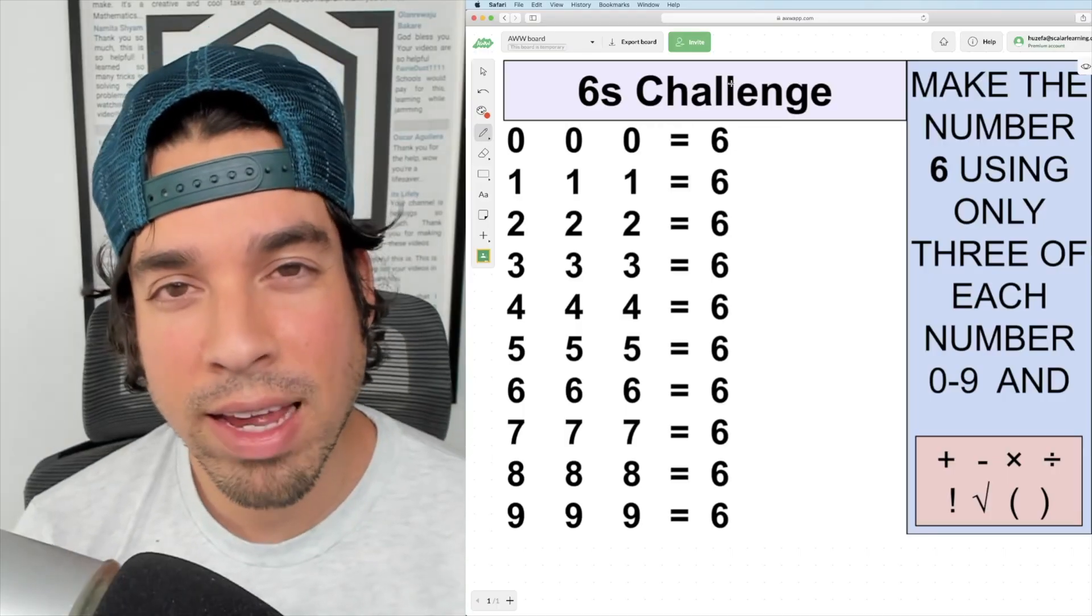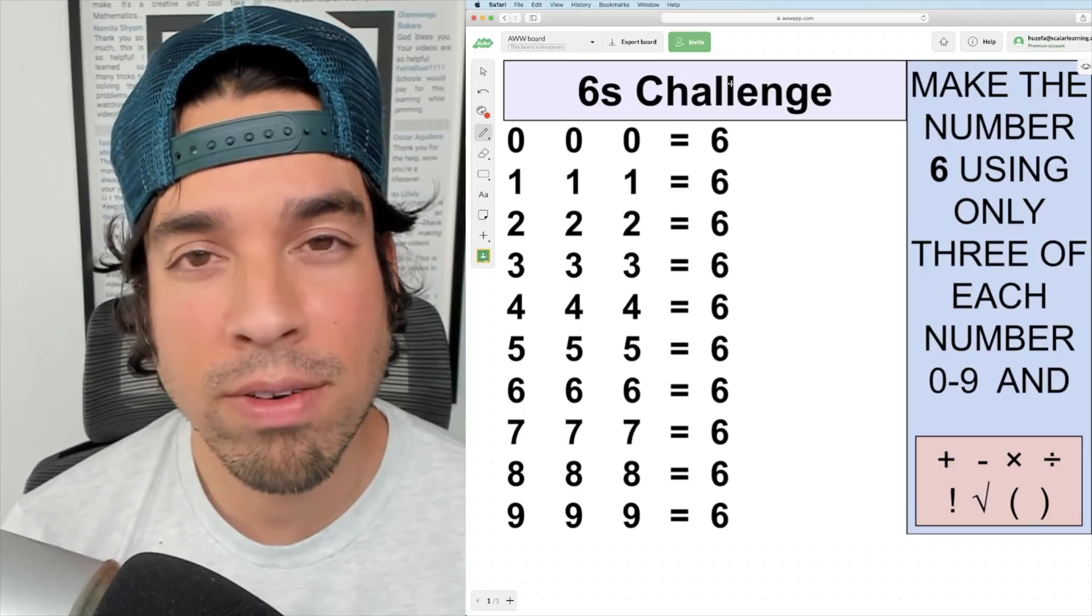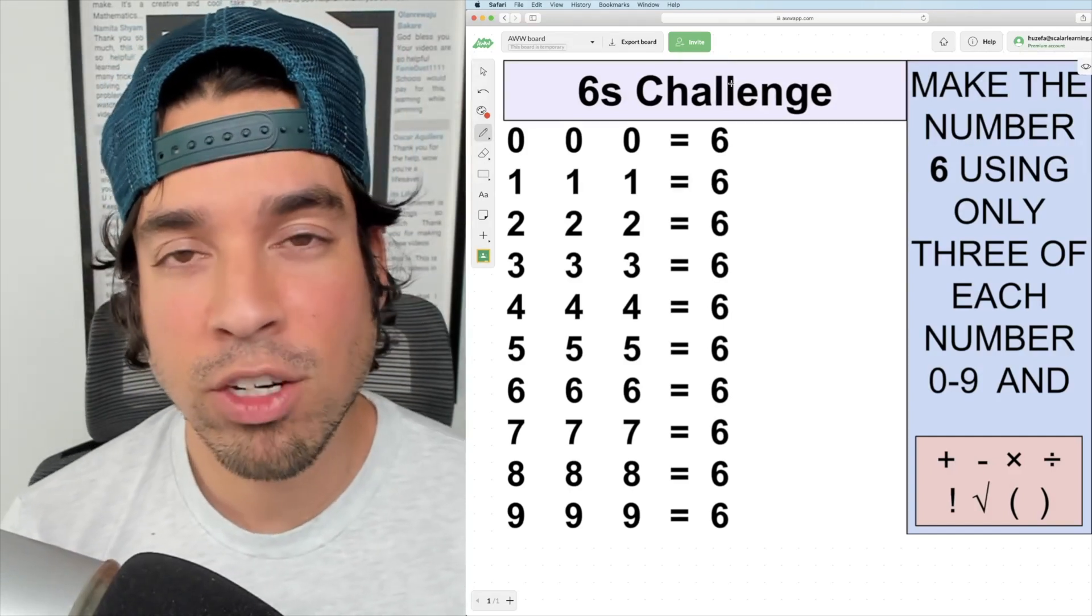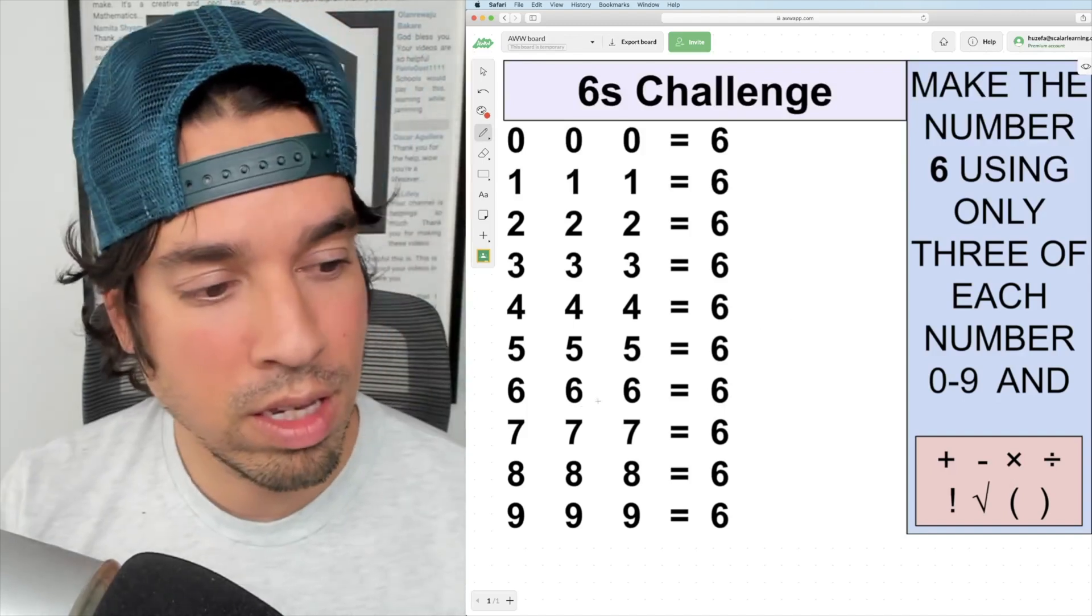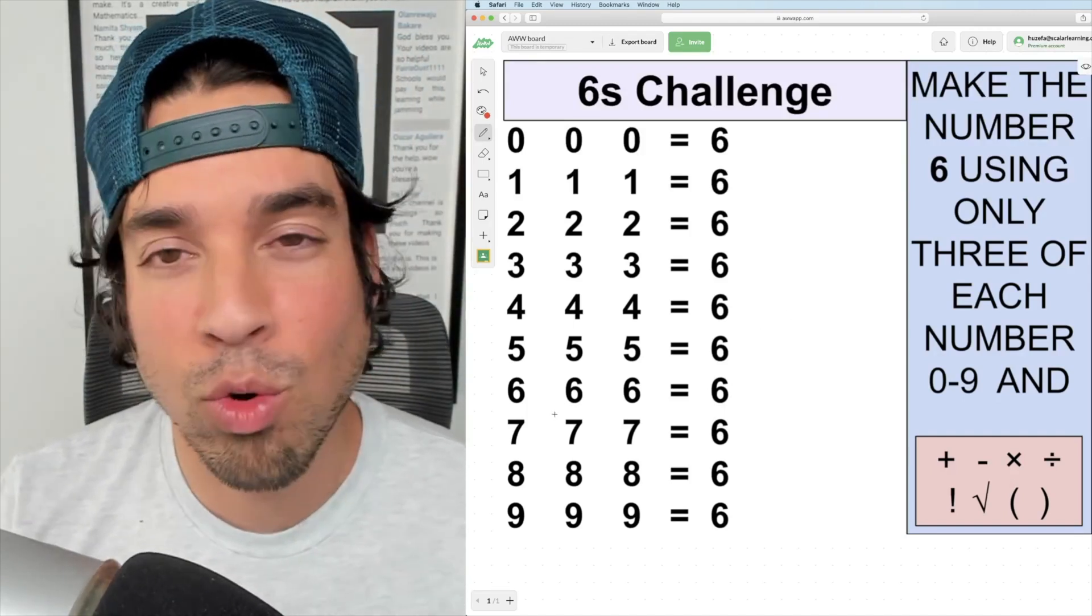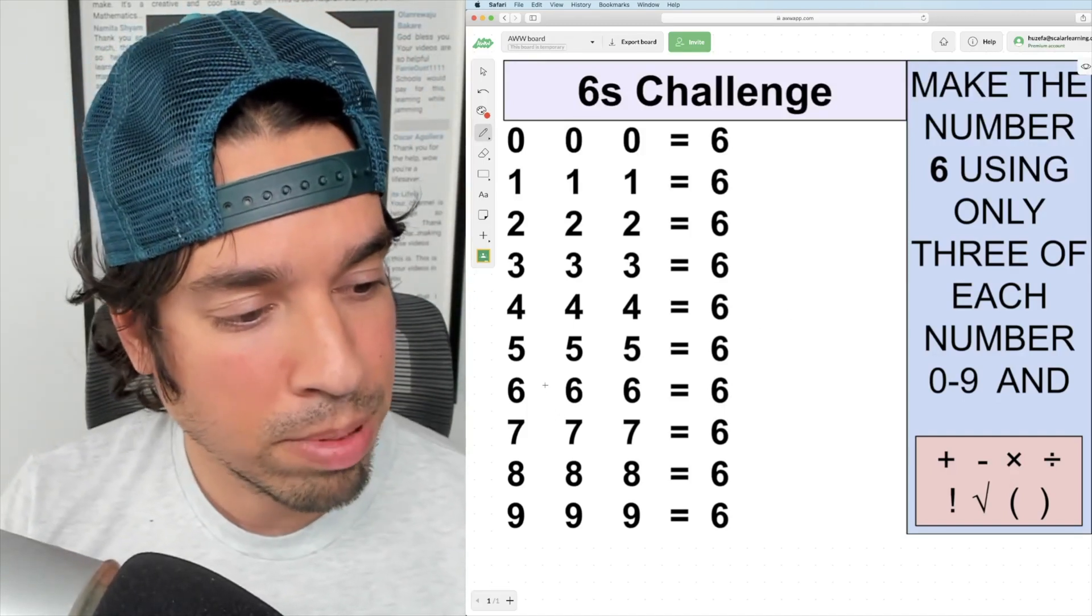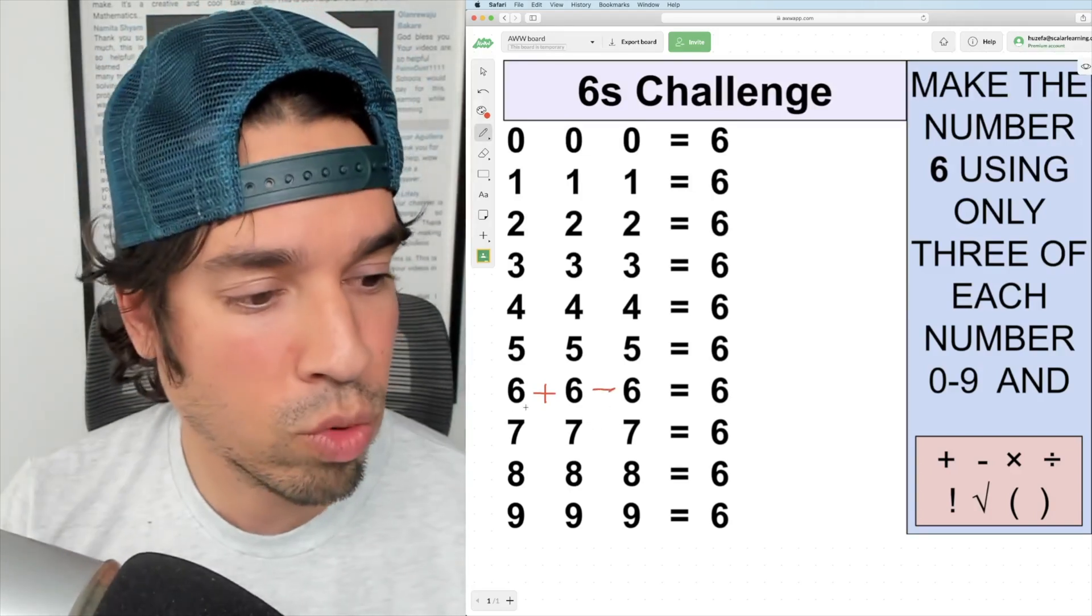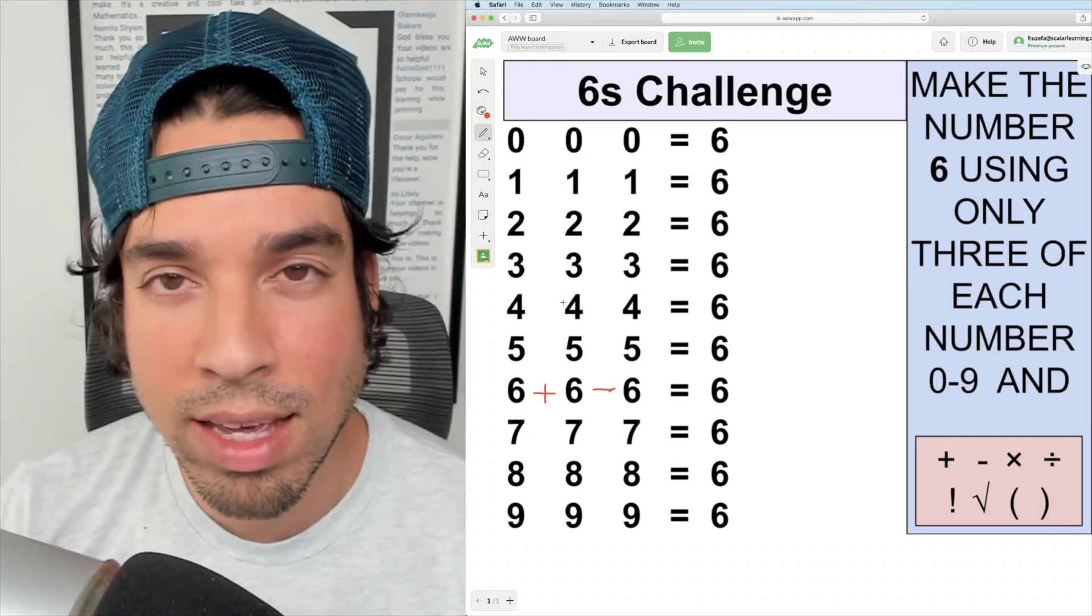When we start a puzzle like this, it's always important to find where we should start. Where's our easiest point of entry? To me, that's the three sixes because I can quickly see that if I simply add and then subtract, I got six. 12 minus 6 is 6, and we got that one done.